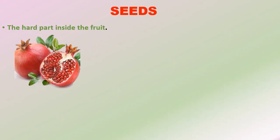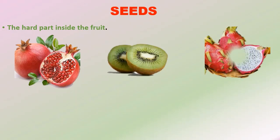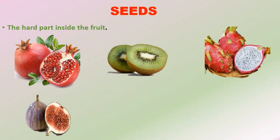The hard part inside the fruit is called a seed. Most plants grow from seeds. Some fruits have seeds which are edible, such as pomegranate, kiwi, dragon fruit, fig and banana.